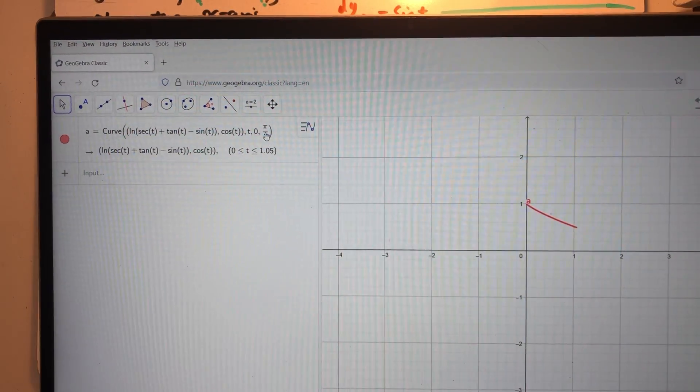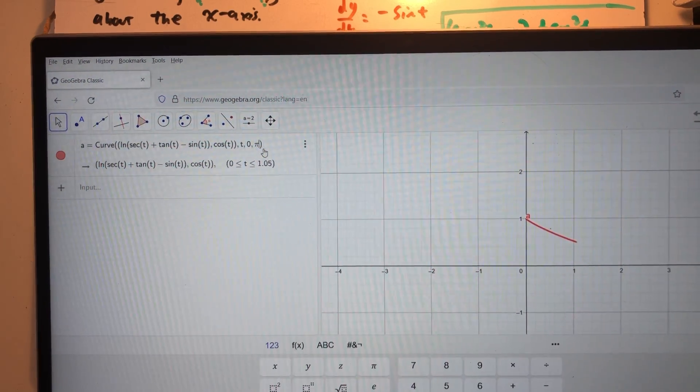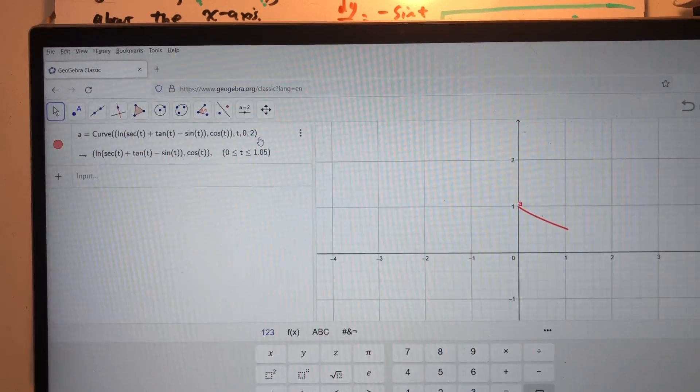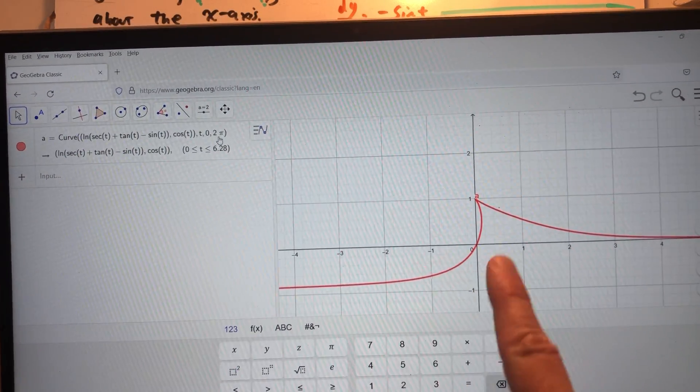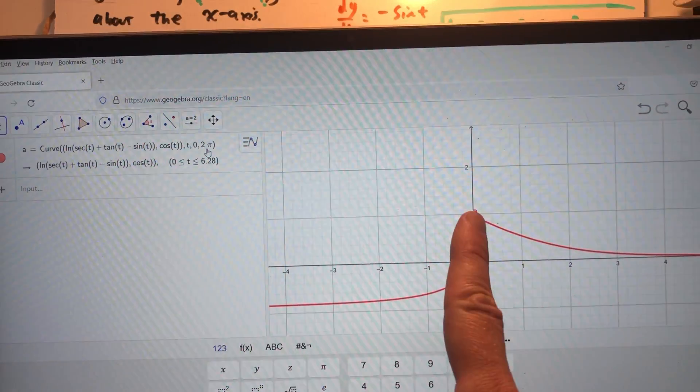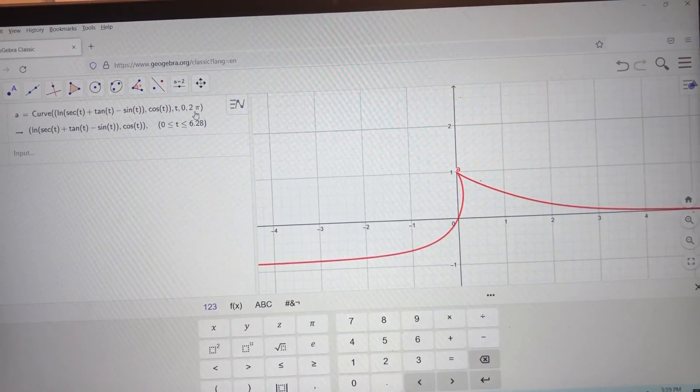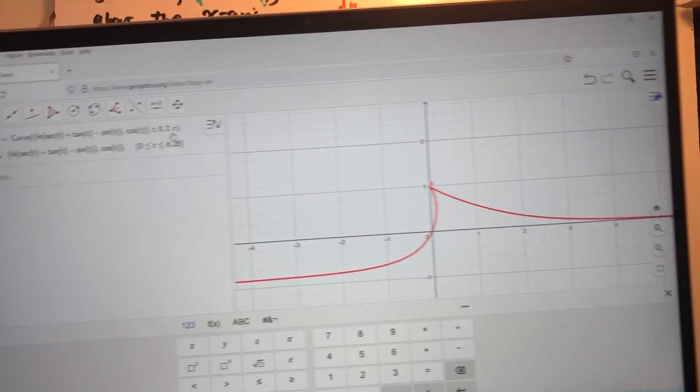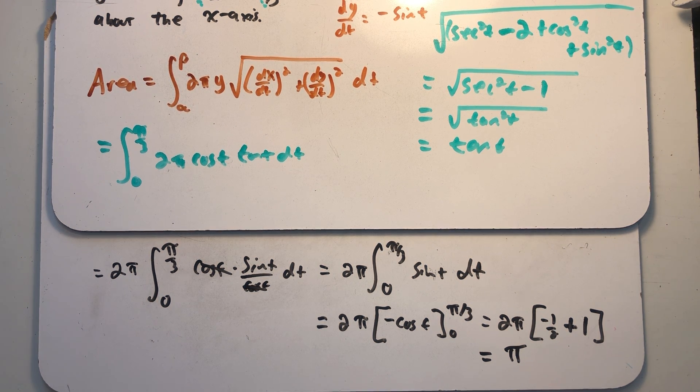But I also wanted to show you what the parametric equations looked like if I expanded the interval. We're not going to find this length, but I just think this is a cool graph. And so if I expand the interval, I see we were just looking at a little piece up there. It's a much cooler graph if we expand the parameter interval. Well, we found our surface area to be pi. That's all we were asked to do. So I'll talk to y'all later.